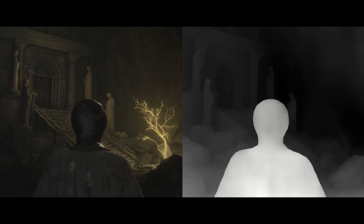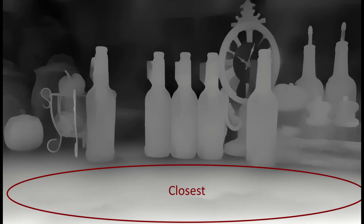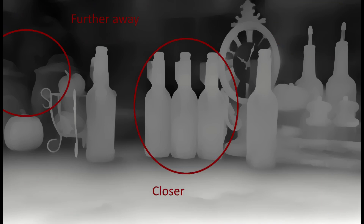Depth mapping is a technique that tries to estimate the distance between the camera and objects within an image. The maps generated by ControlNet use grayscale to represent the distance from the viewer, with white being the closest and black being far in the distance, and the shades of gray representing the area in between.